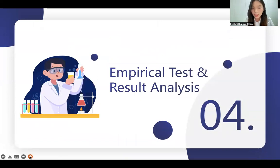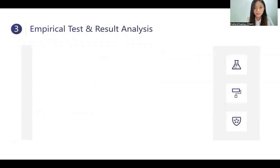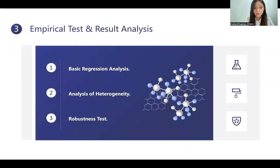The next part is empirical test and result analysis. The first one is basic regression analysis. The conclusion is that technological innovation has a significant positive correlation with economic development at a significance level of one percent and all control variables had a significant positive impact on economic development too.